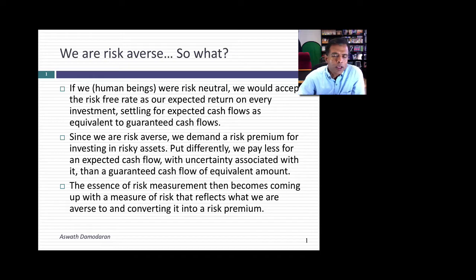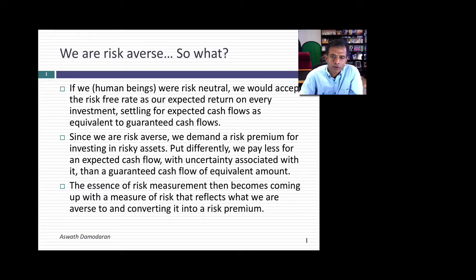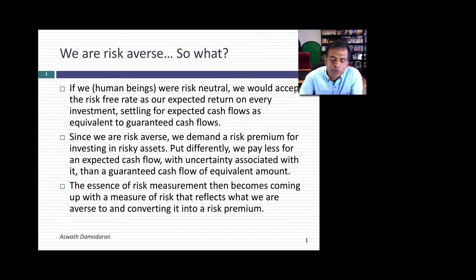Let's first talk about why we spent so much time on the question of whether investors and human beings were risk averse. If we were all risk neutral, we would accept the risk-free rate as our expected return on every investment, no matter how risky it is. Since we are risk averse, we will pay less for a risky expected cash flow than an otherwise equivalent guaranteed cash flow. The challenge is converting risk aversion to value — how do we measure risk, and then bring that risk measure into our assessment of value so we can reduce the value of more risky assets?